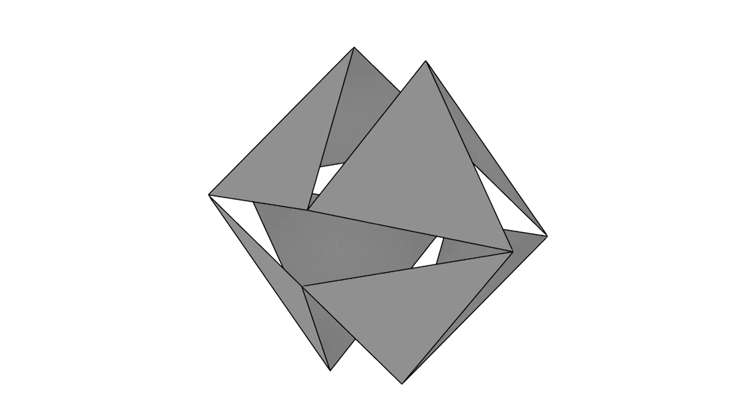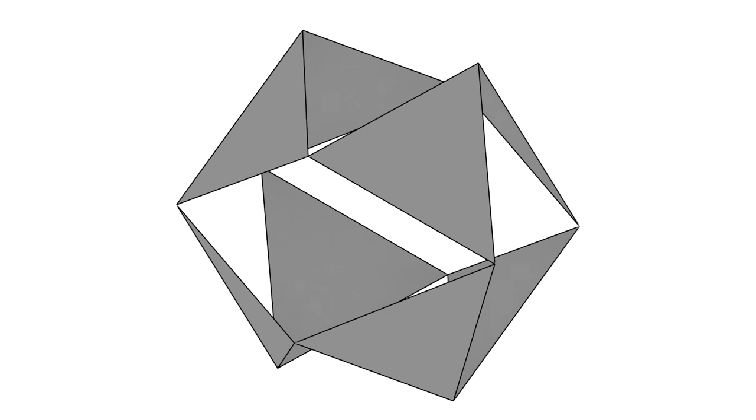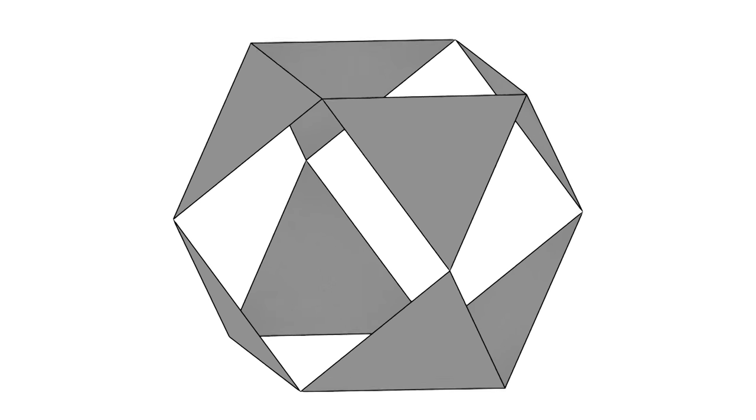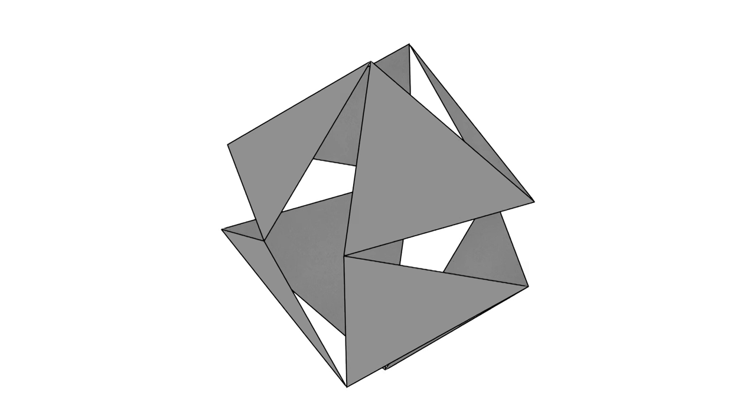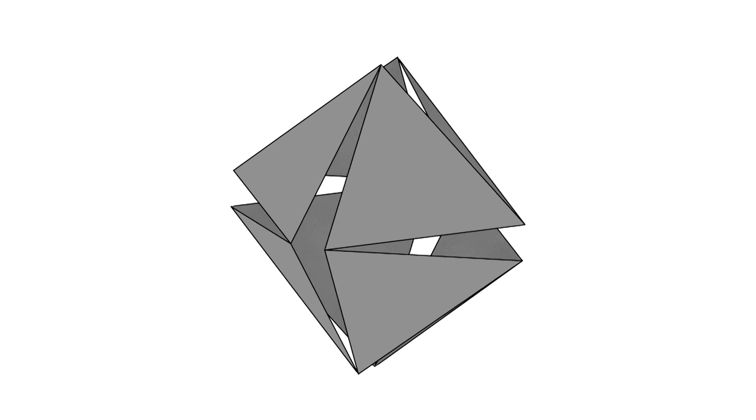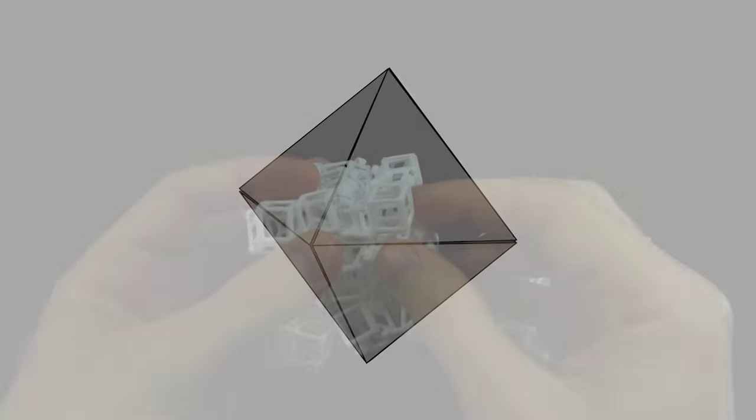Here's an animation that Tonelli put together of the jitterbug mechanism. You see that there are these eight triangles of the octahedron that rotate on hinges at their corners to the cube octahedron and then back down to the octahedron.